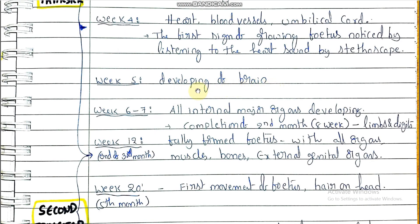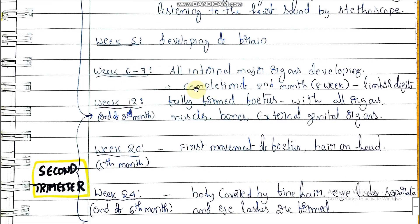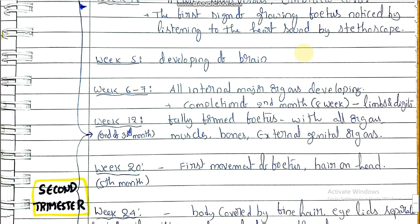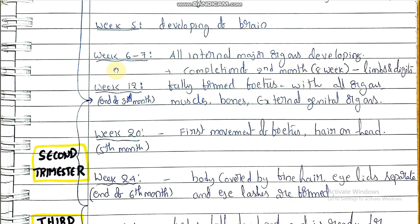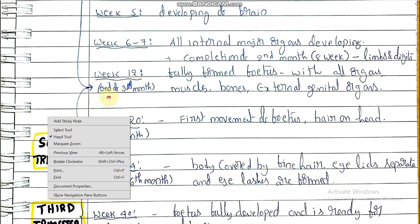In the fifth week, development of the brain takes place. During the sixth and seventh weeks, all major internal organs begin developing. At the completion of the second month — the eighth week — formation of limbs and digits takes place. By week 12, a fully formed fetus is present with all organs, muscles, bones, and external genital organs.